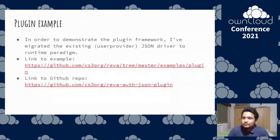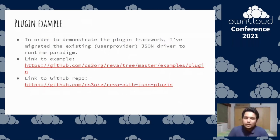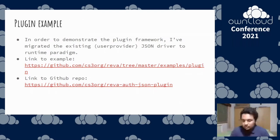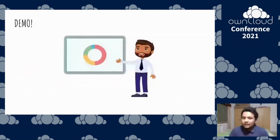Now talking about the example. As a proof of concept, I migrated an existing in-memory driver to runtime. I added that example to the Reva repository — you can check it out. There's also a link to the GitHub repo containing the plugins hosted as a version control repository. I also have a small demo to show how to load the plugins.